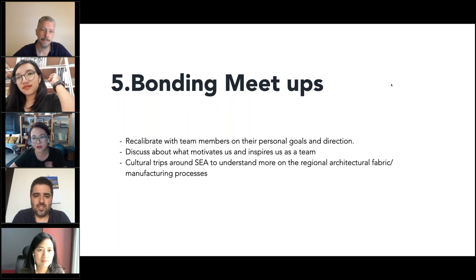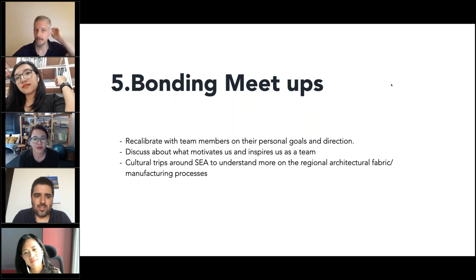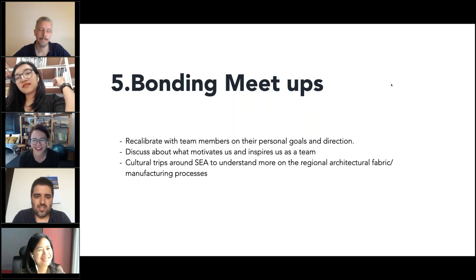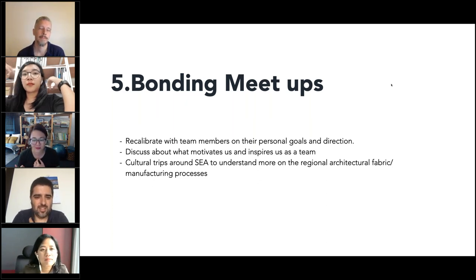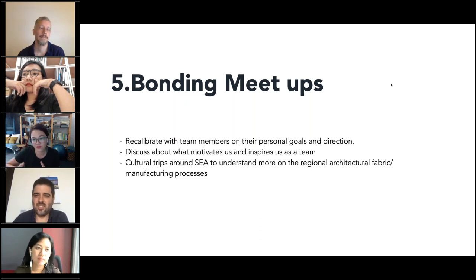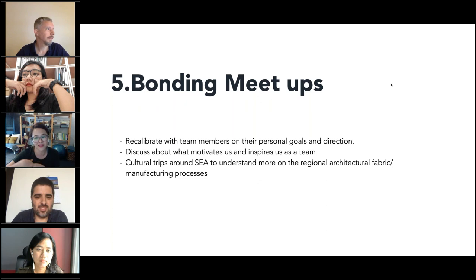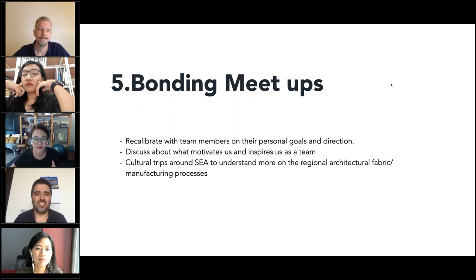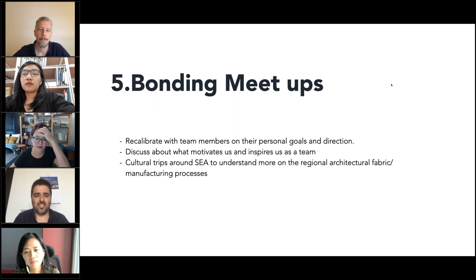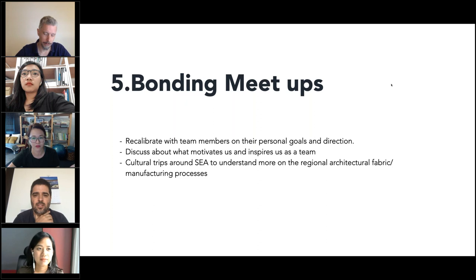The last part is a softer skill: when we do meet physically, we really keep it as a team bonding session to recalibrate — what are our personal goals and directions? We ask what kind of projects each person likes to do and what really motivates us as a team. With that, we can plan and accept or reject certain jobs according to our goals, so we can really do the things that matter to us. We also don't know how long this will last or whether we can survive in this kind of difficult economy, so we just want to do projects we really like.